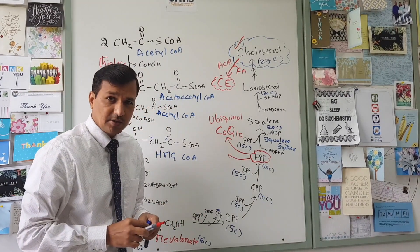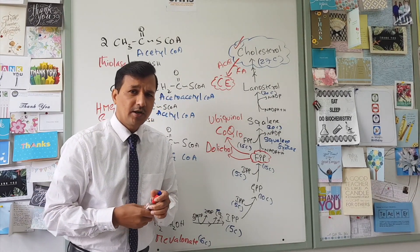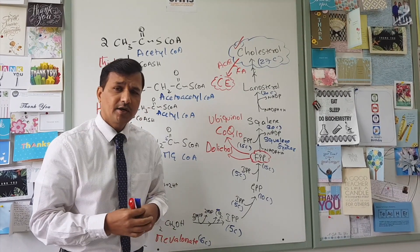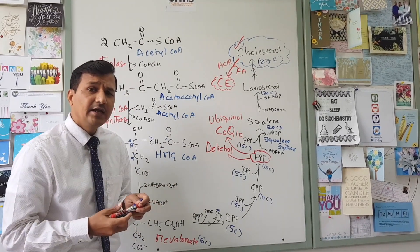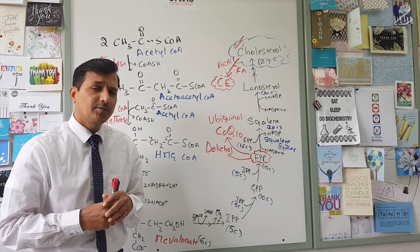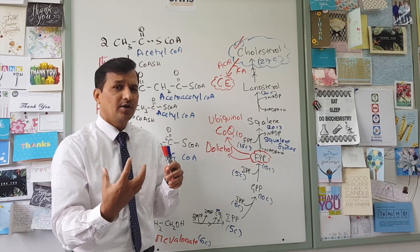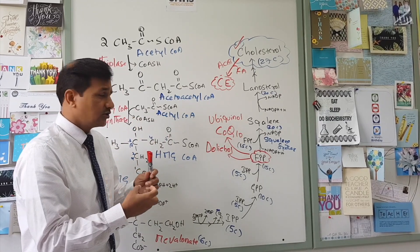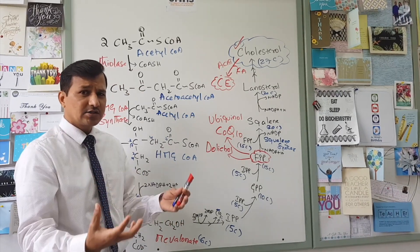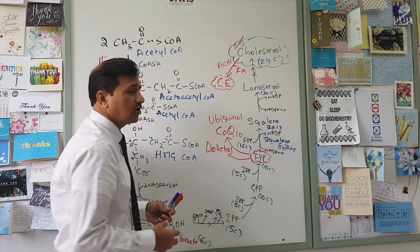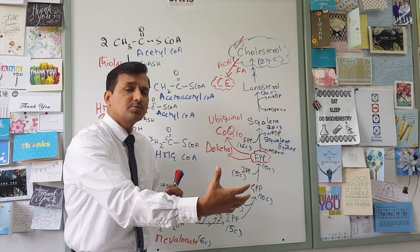A second fate of farnesyl pyrophosphate is dolichol biosynthesis. Dolichol is a polyprenol molecule incorporated into the endoplasmic reticulum membrane, where it participates in N-linked glycosylation. In this process, a carbohydrate unit is built on dolichol as a base and later transferred to the asparagine residue of a protein molecule to form N-linked glycoproteins.